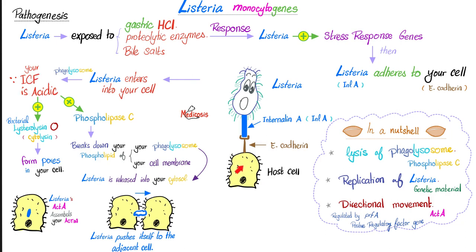This intracellular acidity activates two key factors. The first is Listeriolysin O, which is a cytolysin that causes lysis of your cell by making pores into your cellular structures. The second is Phospholipase-C, an enzyme that breaks down phospholipids — found in your cell membranes and organelle membranes, including the phagolysosome. So the bacteria escapes from the phagolysosome and is released to float freely in your cytosol.